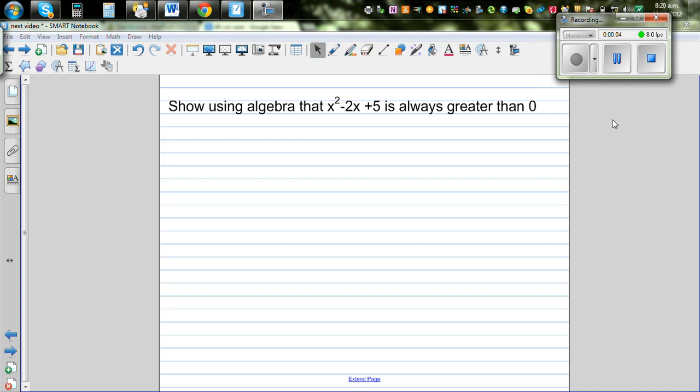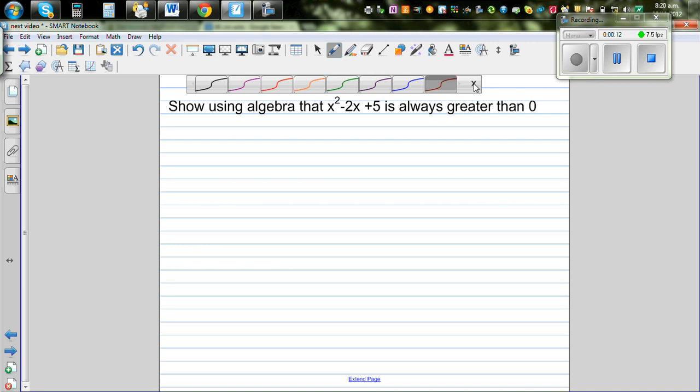Show using algebra that x² - 2x + 5 is greater than 0. We're going to use algebra, though we can do it graphically. I'll first use algebra and then show it graphically.